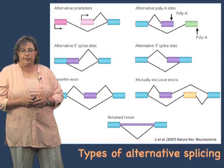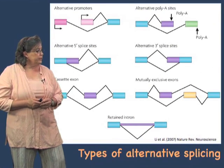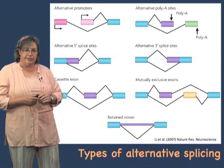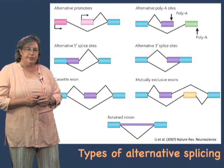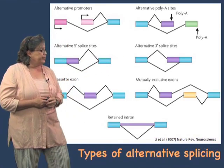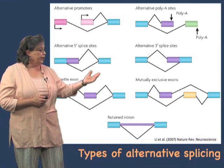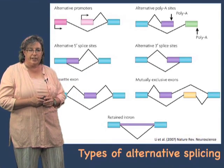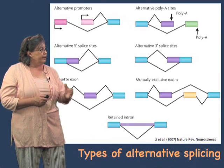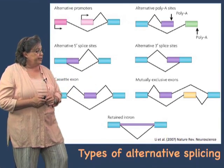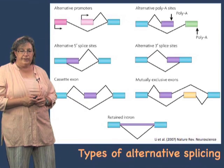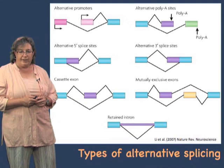There are many different kinds of alternative splicing. There can be alternative promoters, which is the beginning of the gene. There can be alternative polyA sites, so that's the three prime end of the gene. Alternative five prime splice sites — the beginning of an intron — and alternative three prime splice sites. And then there are exons called cassette exons that are either spliced in or spliced out.